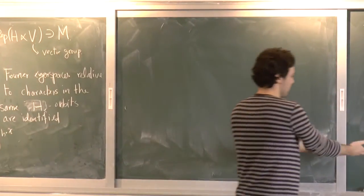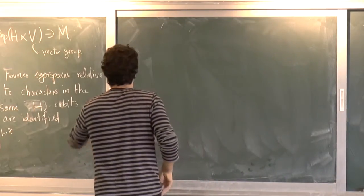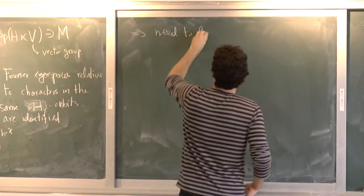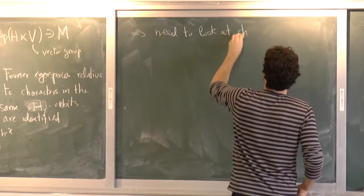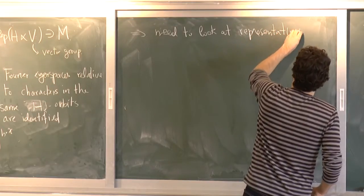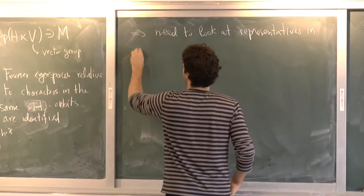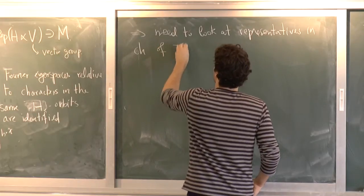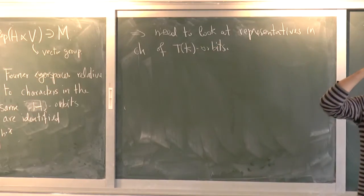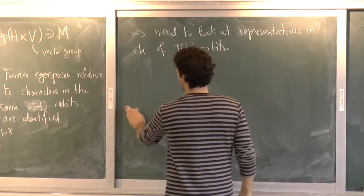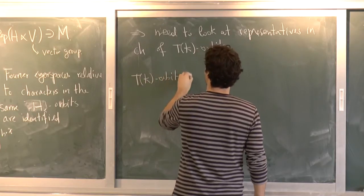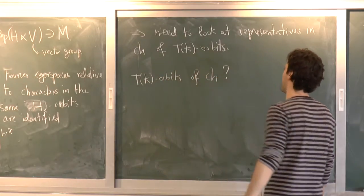I need to only look at characters representative of the T of K orbits on the space of characters. Let me write that. So I'm giving you the proof. I'm just exploiting the symmetry to conclude that... you only need to look at characters... at representatives in CH of T of K orbits. Right?